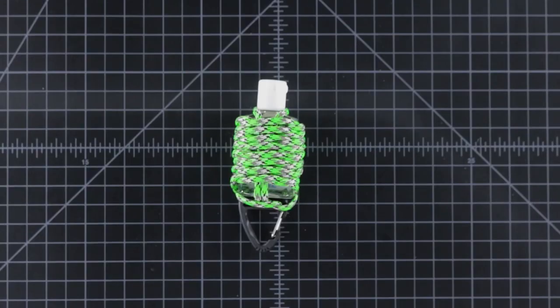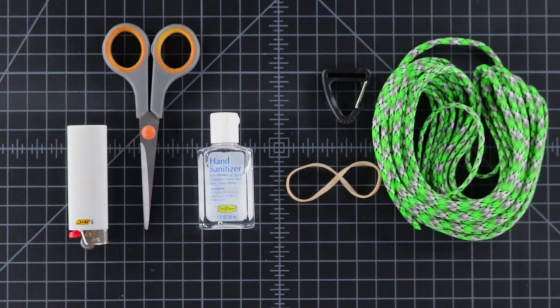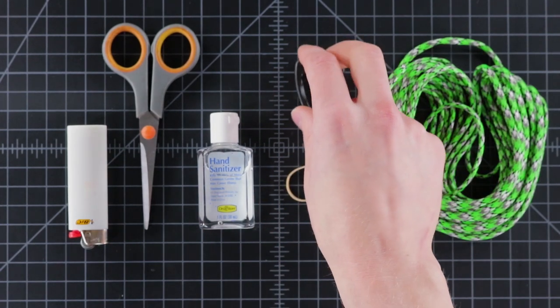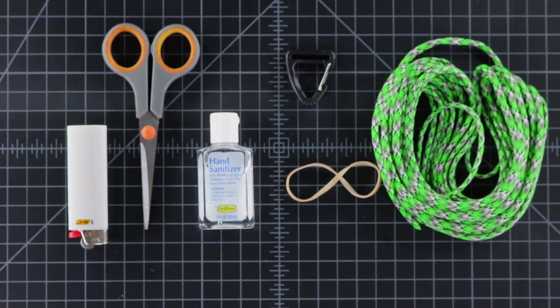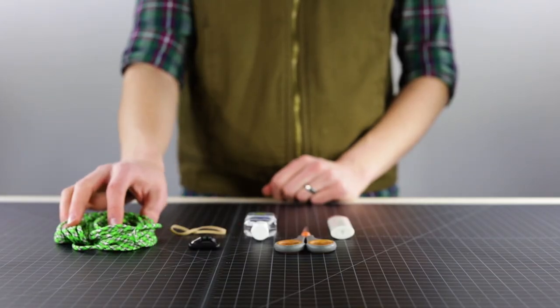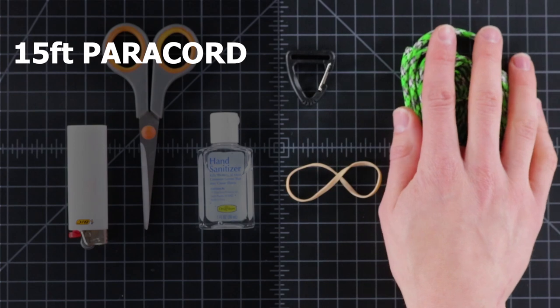We've got here a little one ounce bottle of hand sanitizer, and so we'll be attaching it to a little triangle carabiner so you can just stick it on the outside of your backpack. For supplies, you're going to need some paracord of course, about 15 feet is all you're going to need.